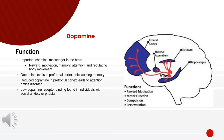The major dopamine pathways in the brain are involved in motor control, motivation, and reward. Dopamine neurons are found to be more concentrated within the ventral tegmental area of the brain. Dopamine also functions in the prefrontal cortex, the nucleus accumbens, the hippocampus, and the striatum — all important locations where dopamine carries out its pathways.